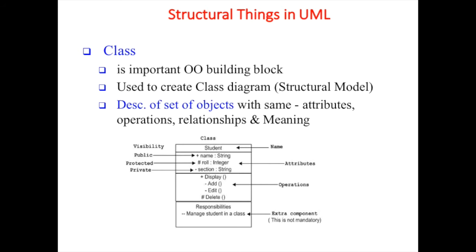On the left side we can see plus and minus signs - these are the visibility modifiers for variables or attributes. For example, plus means public, which can be accessed by the same class or a different class. There is also protected, which is inherited by the subclass.